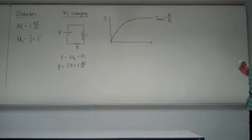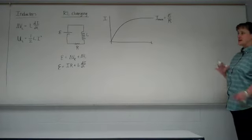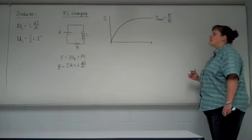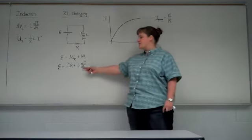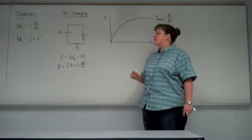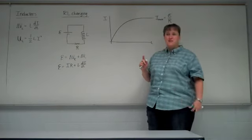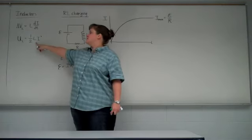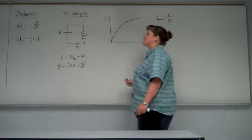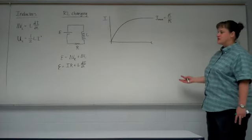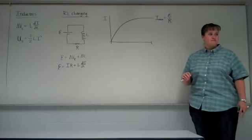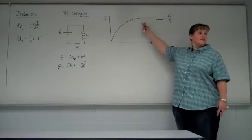Once the current has reached its maximum possible value, it stays constant until you change something about the circuit. Now, the inductor, even though its voltage drop goes to zero because dI/dt goes to zero, it's still storing energy because of the magnetic field it's producing. The amount of energy it stores depends upon how much current is flowing through it — if it has current, it has energy. It's a little counterintuitive: even though the voltage drop can be zero, it can still store energy. When the current becomes constant, the energy will be constant and it's at a maximum value at that point, because that's the maximum current.